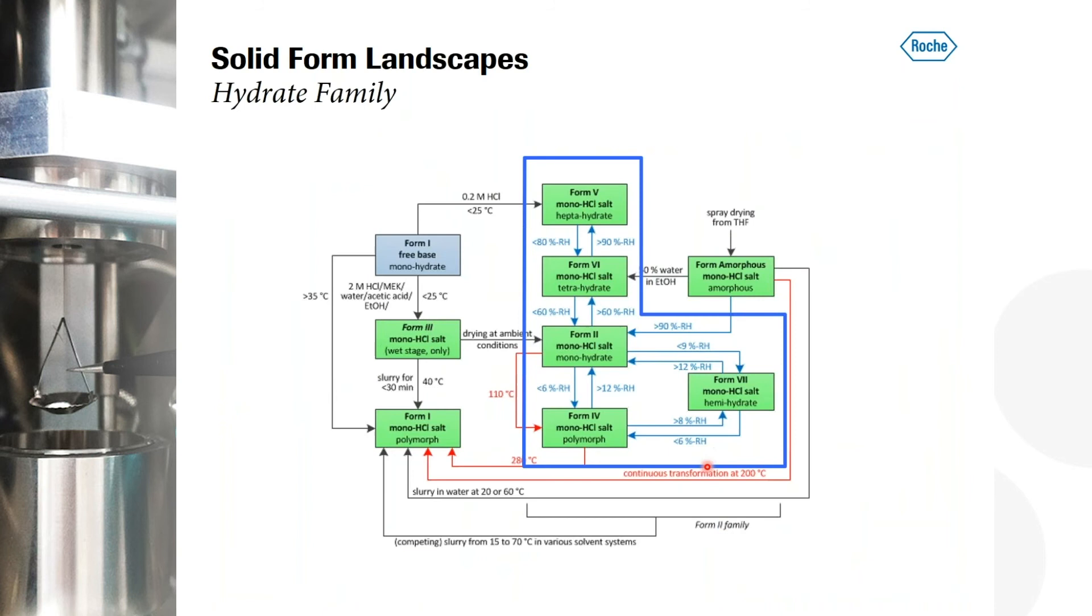And when we have a closer look on this, we can see that we have a polymorph, which is stable at really low relative humidities. We have a hemihydrous form. We have a monohydrate, a tetrahydrate and above 90% relative humidity. We have also a heptahydrate. And you see this is reversible. You see all these arrows going up and down. So this is a reversible conversion.